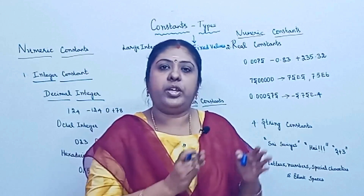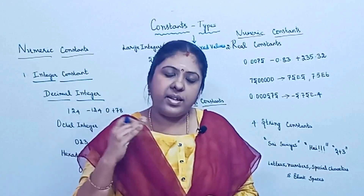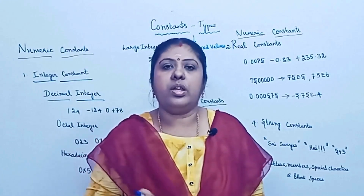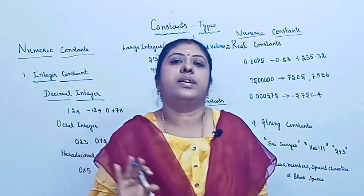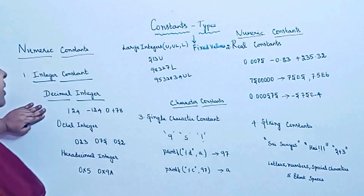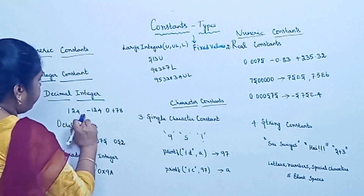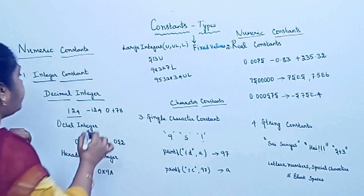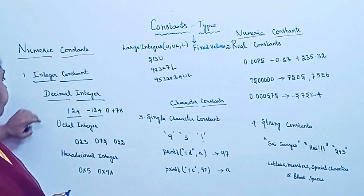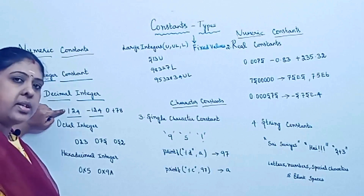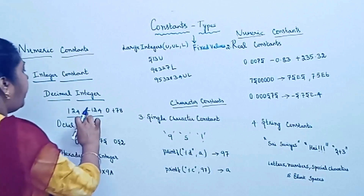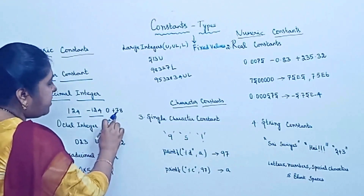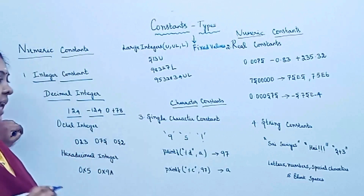Normally we only use decimal integers. Octal and hexadecimal constants are used only occasionally, so you just need to know how to represent them. For decimal integers, consider the number 124 — this is a valid decimal integer. Minus 124 is a negative number. Zero and plus 78 are also valid. When a number is written without any sign, it is considered positive.